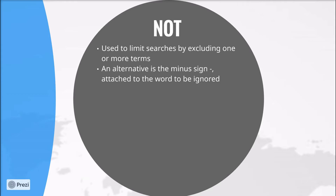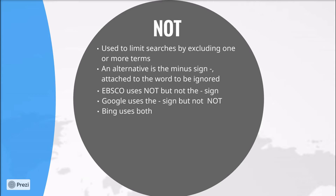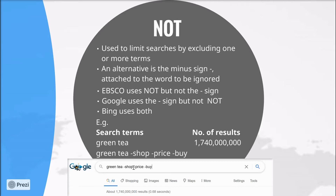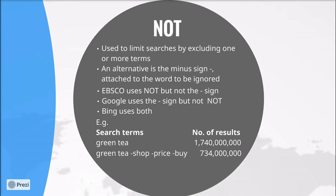You need to be careful because not every database or search engine will use both of these. For example, EBSCO uses NOT but not the minus sign. Google uses the minus sign but not NOT, while Bing uses both. So if I do a very broad search for green tea, I get over 1 billion results. Now if I'm doing research for an academic paper, I'm not interested in buying green tea, so I might want to exclude the words shop or price or buy. And if I now search, it limits the results to just over 700 million — still a lot, but far fewer than before, and the results will be more relevant to my research.